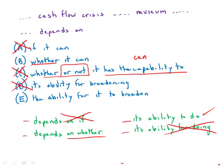E does have the infinitive, the ability to broaden. But think about this, the ability for it to broaden, as opposed to its ability to broaden. So this is very indirect and wordy. This one doesn't work.